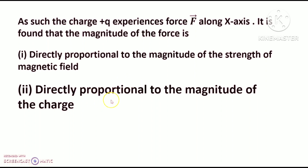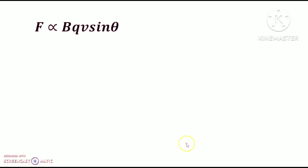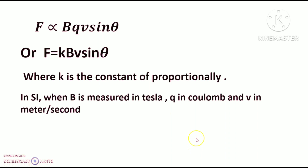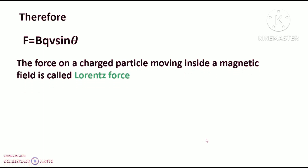So: F proportional to B, F proportional to q, and F is directly proportional to the component of velocity along a direction perpendicular to the direction of magnetic field. Therefore F proportional to BQv sin theta, so F equals qBv sin theta, where k is the constant of proportionality. In SI units, when B is measured in Tesla, q in Coulomb, and v in meter per second, k equals one. Therefore F = qBv sin theta. This force is called the Lorentz force.